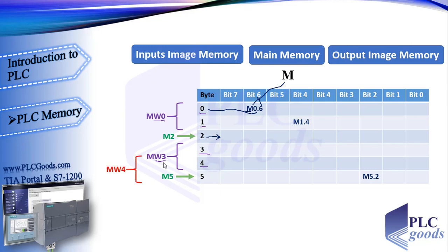Pay attention to the MW4 and MW3 addresses — byte 4 is used in both of them. So if MW3 is used to store a number, we should not use MW4 to store another number. These rules also hold for input and output image memory; we just need to use I or Q instead of M.